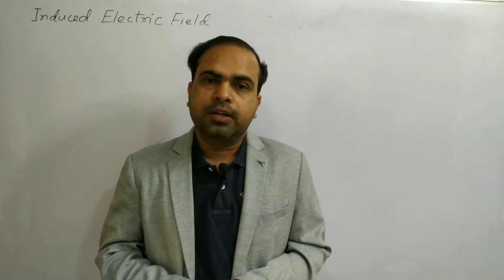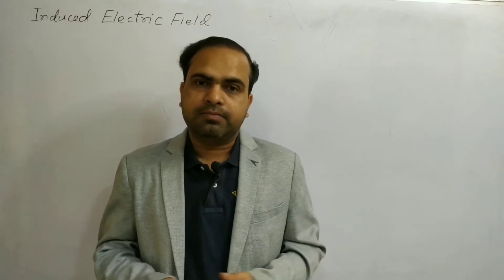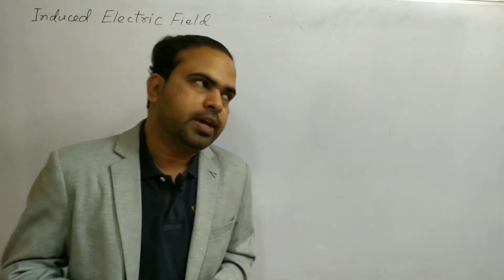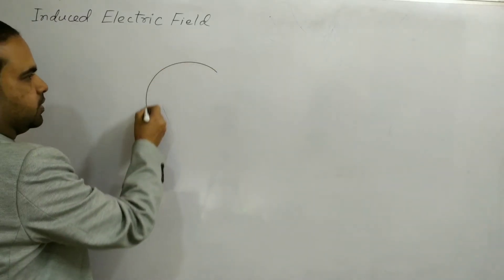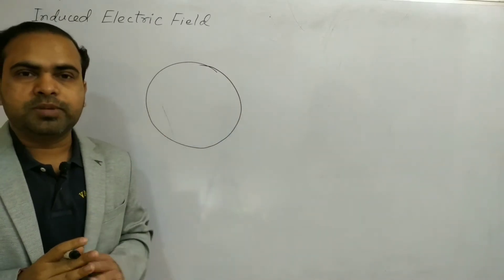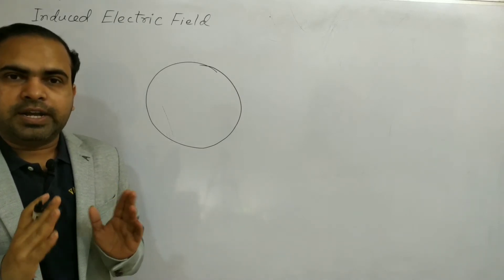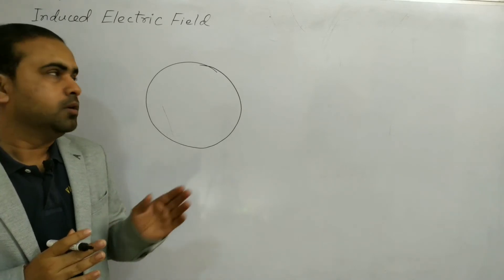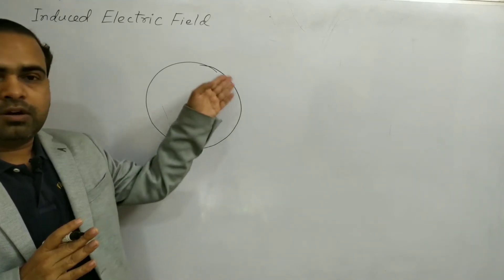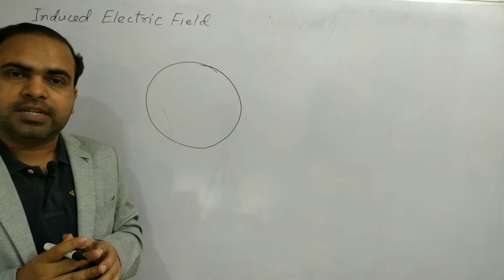Now, consider the free electrons in this conducting loop — are they at rest or in motion? Here we are neglecting the random motion of the free electrons, so we will assume that all the free electrons in this metallic conducting ring are at rest.